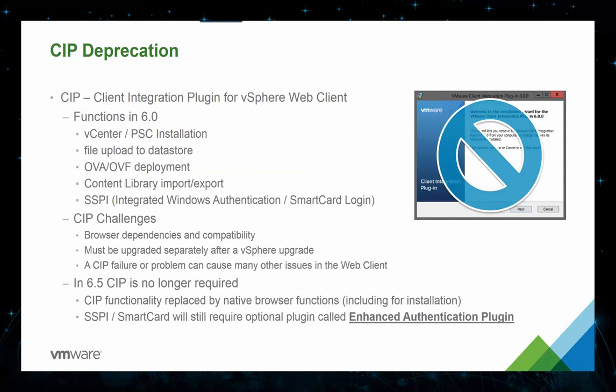The current vSphere web client requires the browser Client Integration Plugin, or CIP. The CIP was somewhat troublesome to work with and caused numerous issues, especially when deploying the vCenter Server Appliance initially. It also had to be upgraded with each vCenter version update. Now with vCenter 6.5, it is no longer needed as we are using native browser functionalities. The only exception is if you implement SSPI or SmartCard for two-factor authentication with the vSphere web client, which will require an optional Enhanced Authentication Plugin. But otherwise, we no longer need that Client Integration Plugin, which is definitely a blessing.